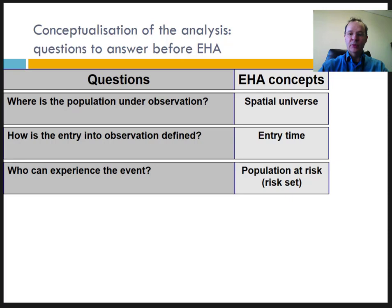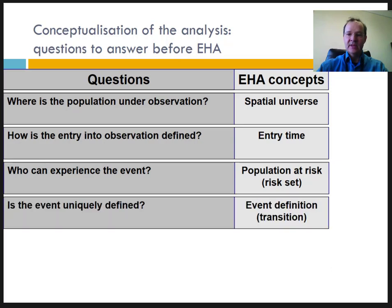Once the broad definition of the event is agreed on, it is necessary to define the events more precisely. The event might not be as homogeneous as it seems. For example, when referring to birth history, do you want to include miscarriages, abortions, and stillbirths? Or do you want to limit yourself to live births? What is the limit between a stillbirth and a live birth?